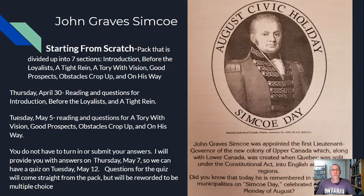For today, Thursday April 30, you are going to read and do the questions for the first three sections: Introduction, Before the Loyalist, and A Tight Rain. Then next week, Tuesday, you're going to finish the pack by reading and doing the questions for A Tory with Vision, Good Prospects, Obstacles Crop Up, and On His Way.